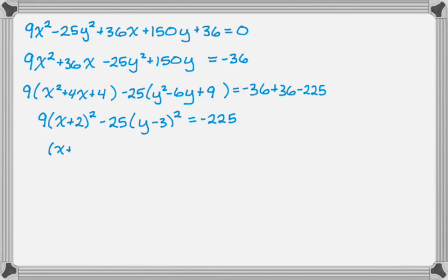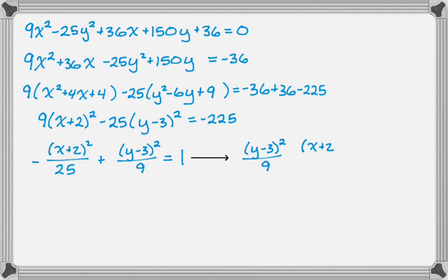It has to be equal to 1, so I'm going to divide through by negative 225, which gives me this. And then I'm going to rearrange it, because I want the positive thing to come first, because that's how I work with these. All right, so that's the equation that I'm going to graph.